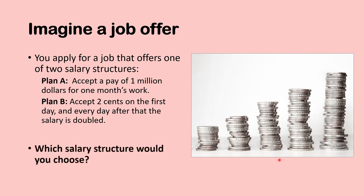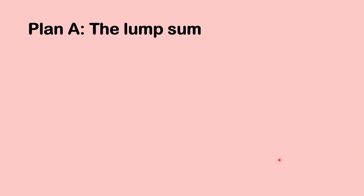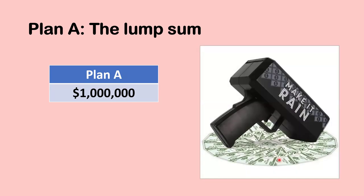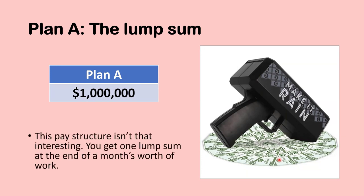Which salary structure would you choose? Plan A is simply a lump sum — you receive $1 million at the end of that month of work. For most of us, that feels like quite a bit of money, probably more than we've ever handled personally, and after one month of work you would become a millionaire. There's nothing particularly complicated about this pay structure.